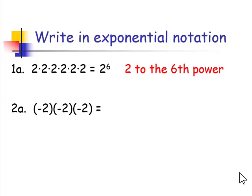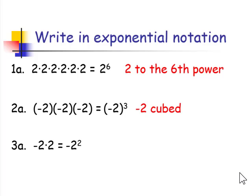In the next example, negative 2 is being used as a factor 3 times. It reads as negative 2 cubed. In this case, we have negative 2 times 2, which reads as the opposite of 2 squared.